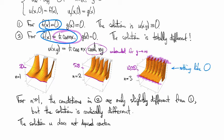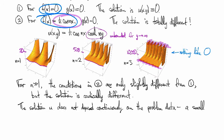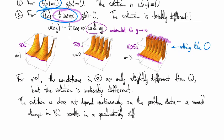And so more formally, we might say that the solution u does not depend continuously on the input data, meaning the initial condition, or sorry, I guess this is a boundary condition. A small change in the boundary condition results in a qualitatively different solution. I'll make that a little bit more precise in the following video.